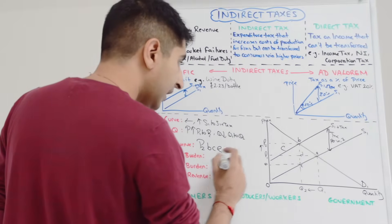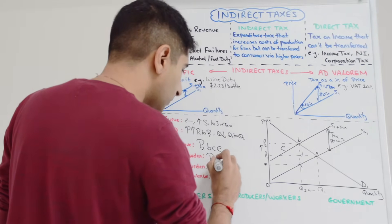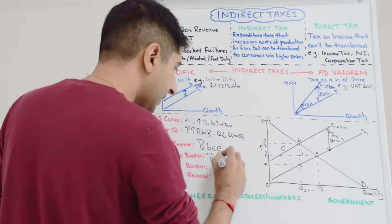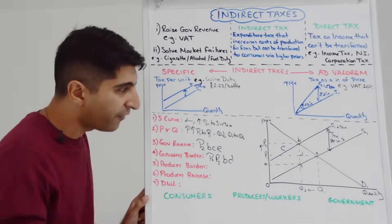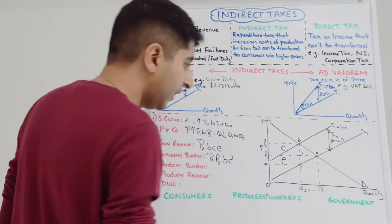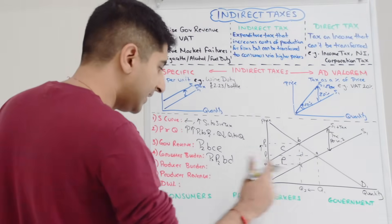In this situation that's the box P1P2BD, that's the consumer burden. Whatever is left is the producer burden, so that's here P1DCE.